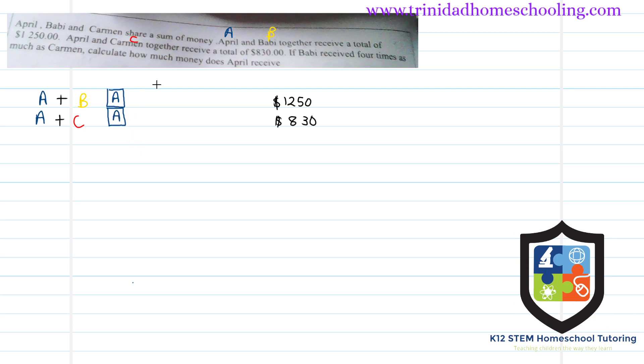Together with Carmen, her share doesn't change. Now they said Barbie received four times as much as Carmen. So this means whatever share that Carmen got, Barbie got four times as much.